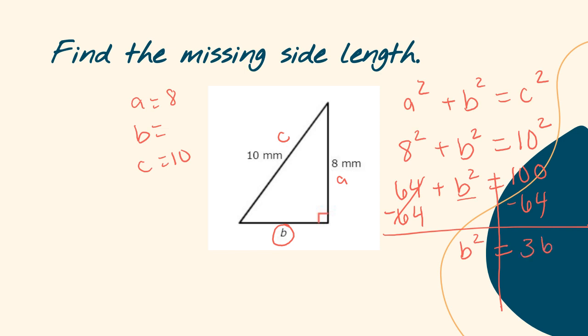Now I have B squared equals 36, but I don't want what B squared is — I want just what B equals. To find the opposite of squaring, I take the square root. I take the square root of both sides, and those cancel each other out, leaving me with B equals the square root of 36. The square root of 36 is 6, because 6 times 6 equals 36. So B equals 6. You could do 8 squared plus 6 squared and see if that equals 10 squared — I'll let you do that on your own to double-check.